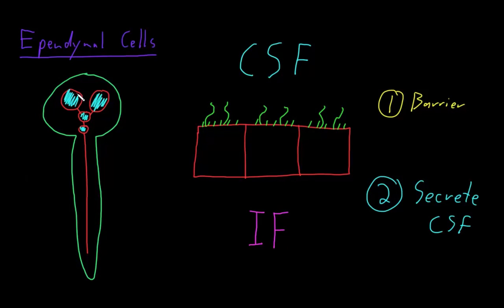Specialized ependymal cells and capillaries form little tufts in some of these spaces in the brain. And this is actually where the cerebrospinal fluid is secreted into these spaces so that there will be capillaries very close to the ependymal cells. And in these little tufts, fluid will be secreted across the ependymal cells to create the cerebrospinal fluid.